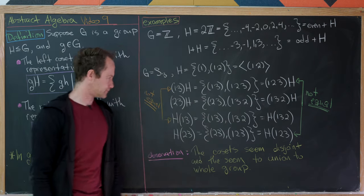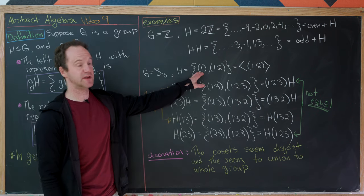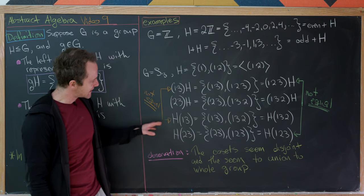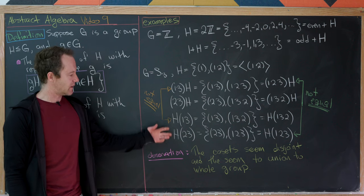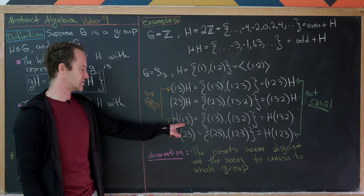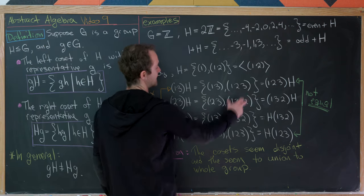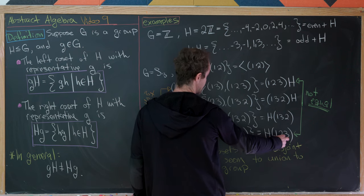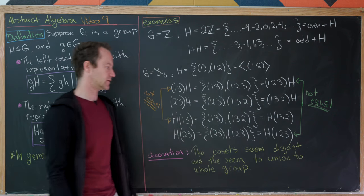The left coset associated to (2 3) is {(2 3), (1 3 2)}, which is the same as the left coset of (1 3 2). We also have right cosets, which can be calculated similarly. The important thing to notice is that the right coset attached to (1 3) is not equal to the left coset connected to (1 3) — they both contain (1 3), but not the same 3-cycle. Likewise the right coset containing (1 2 3) is not equal to the left coset with representative (1 2 3).